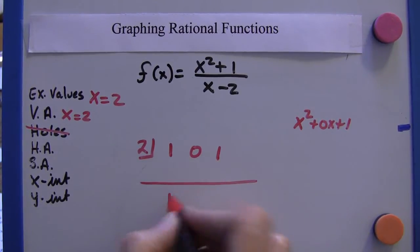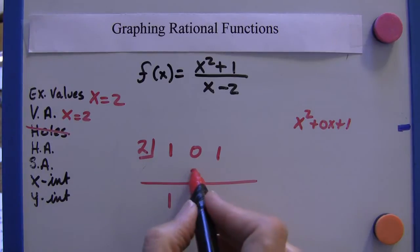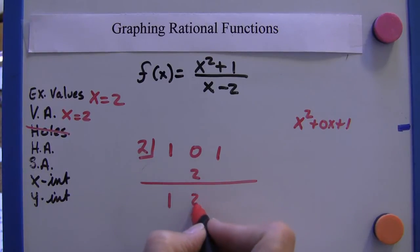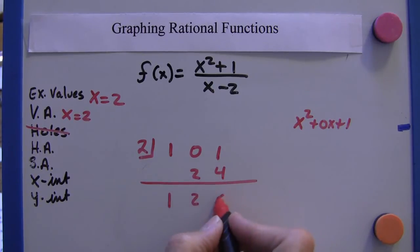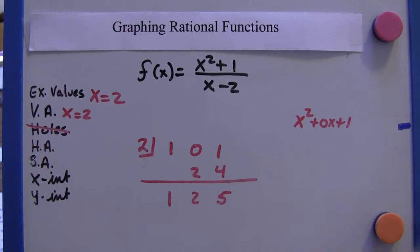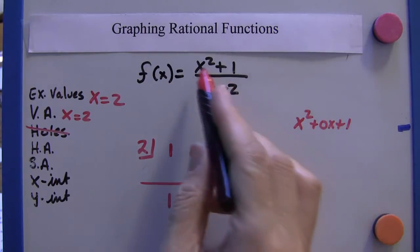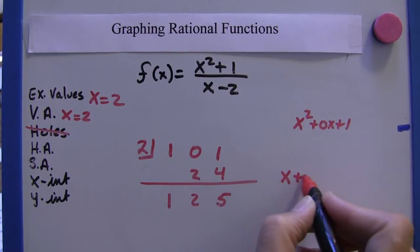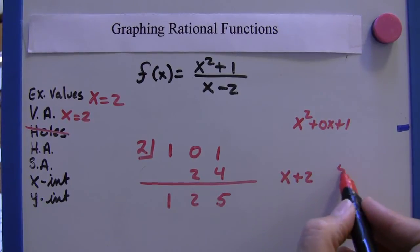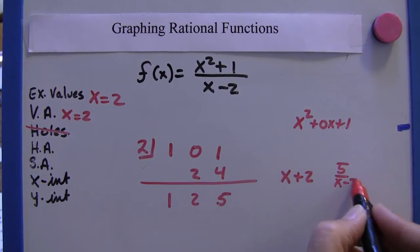Bring that one straight down. Two times one is two. Zero plus two is two. Two times two is four. One plus four is five. So my quotient here, when I divide this, is going to be x plus two with a remainder of five over x minus two.